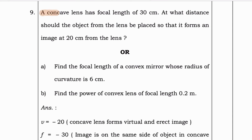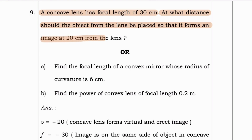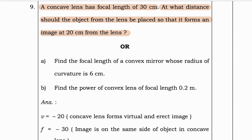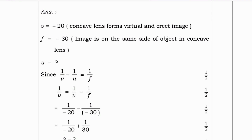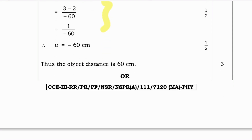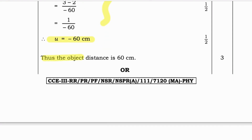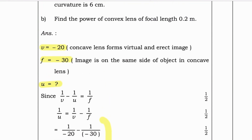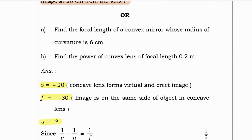Next question: A concave lens has a focal length of 30 cm. At what distance should the object be placed from the lens so that it forms an image at 20 cm? This is similar to the previous question. Given v = -20 cm and f = -30 cm, solving for u we get u = -60 cm. Thus the object distance is 60 cm.